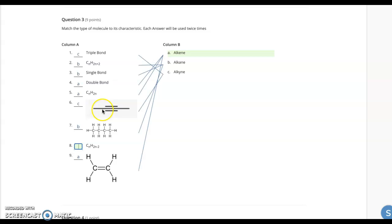And then the alkyne, I got one, two, three, four carbons. So that would be C4H, two times four is eight, minus two would give me H6 would be the formula for that one. So that would be an alkyne.